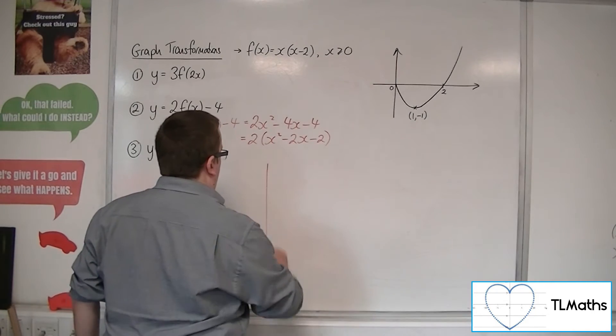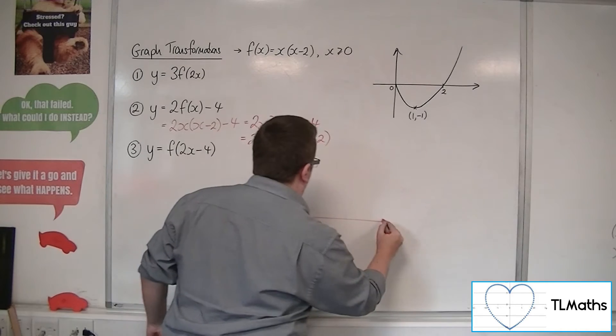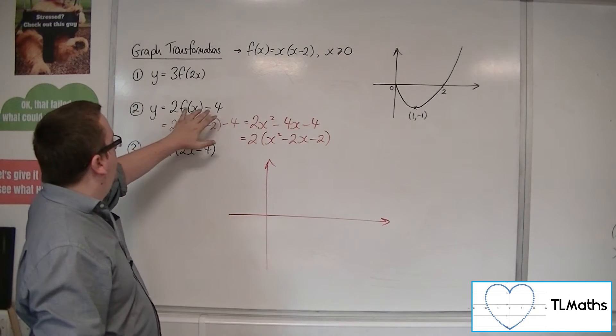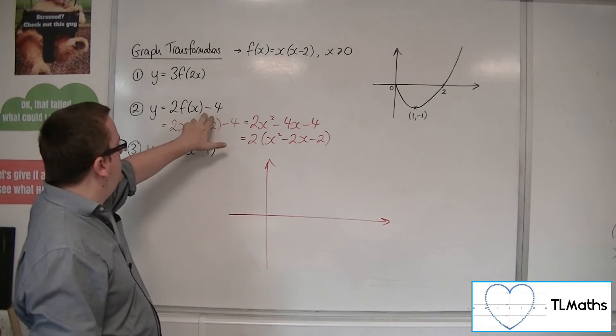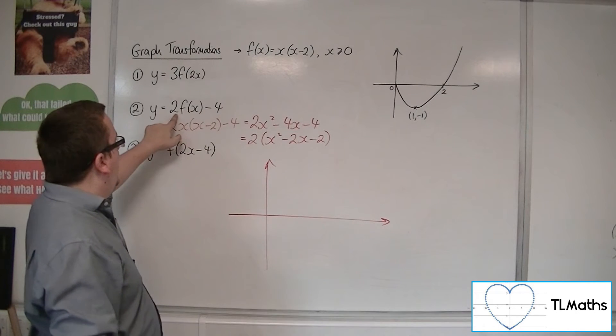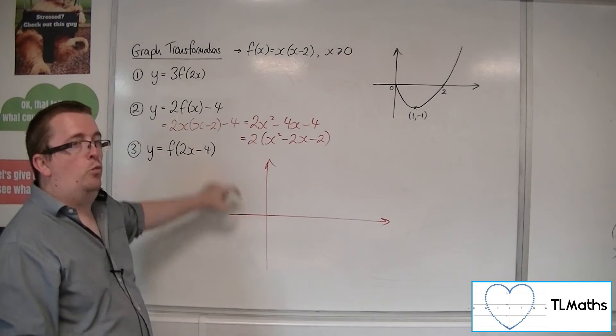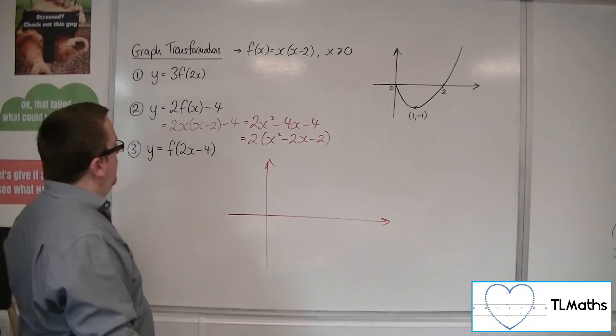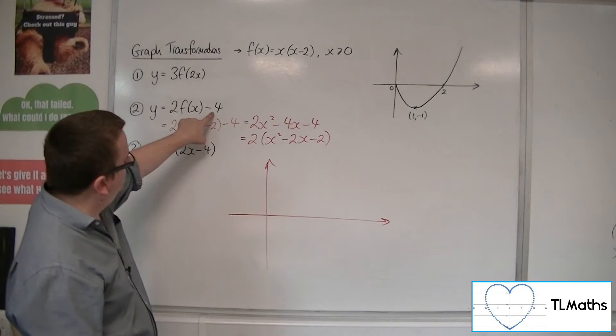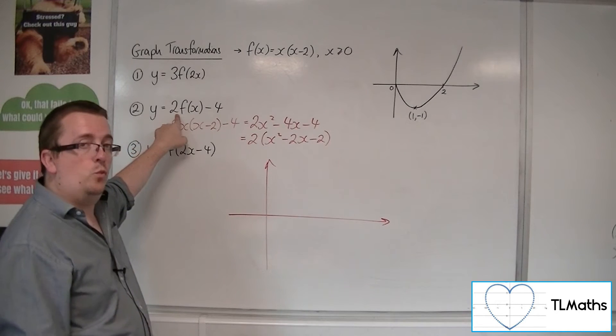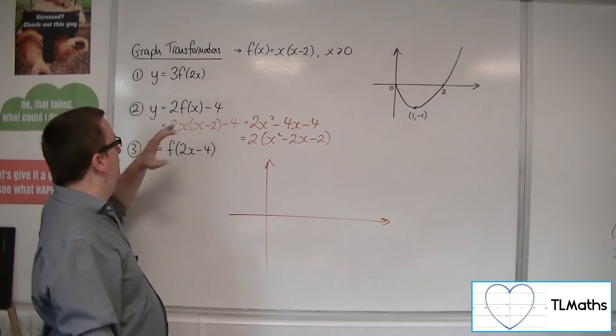Let's have a look at this graph. What's this going to look like? We've got the 2 lots of f of x take away 4, so clearly there's a translation here and there's a stretch. It would be an idea to figure out which one came first. Was it the translation by the vector 0 minus 4, or was it the stretch by the factor 2 in the y-axis or parallel to the y-axis?